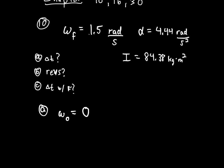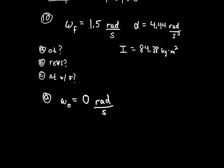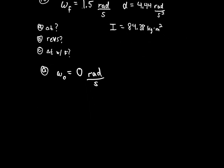It's initially stopped when you get on it and then you start running around to make it spin faster. So you've got an omega-final of 1.5 radians per second, and we're asked to find the change in time.